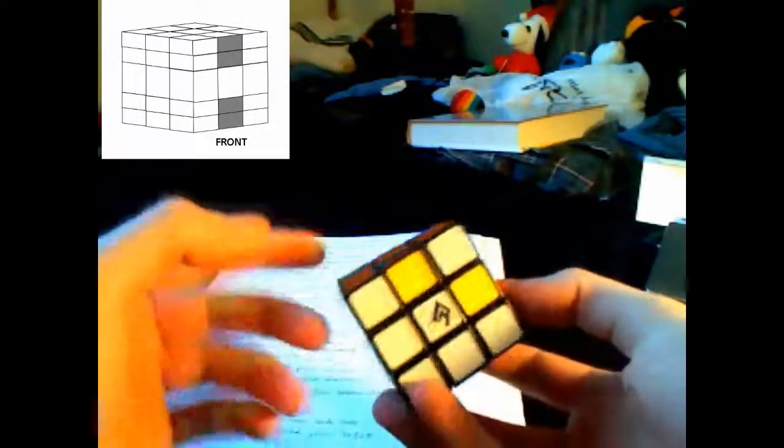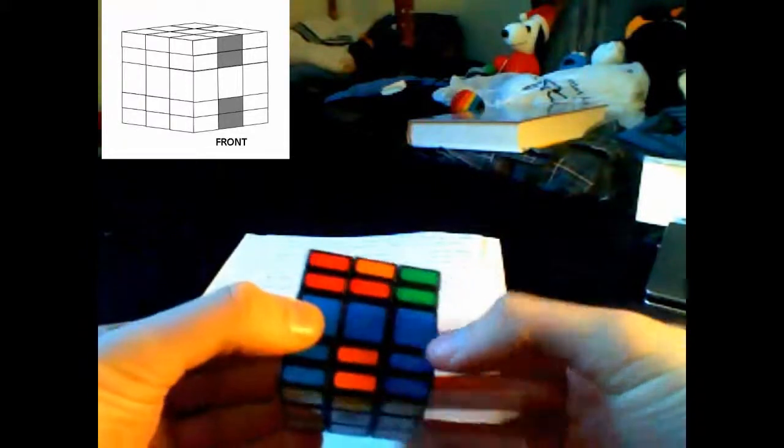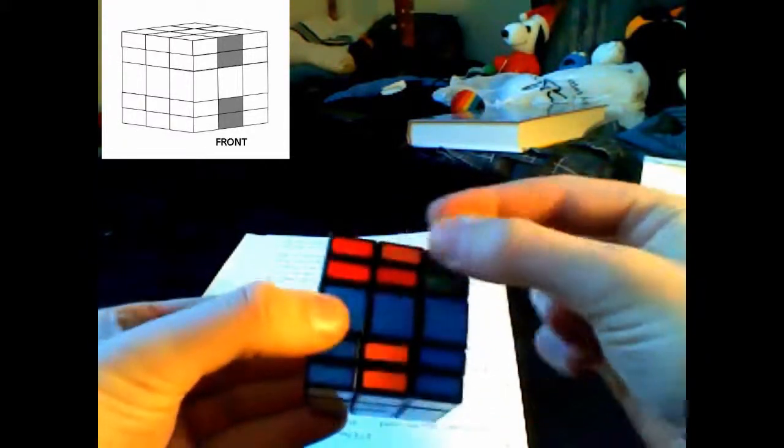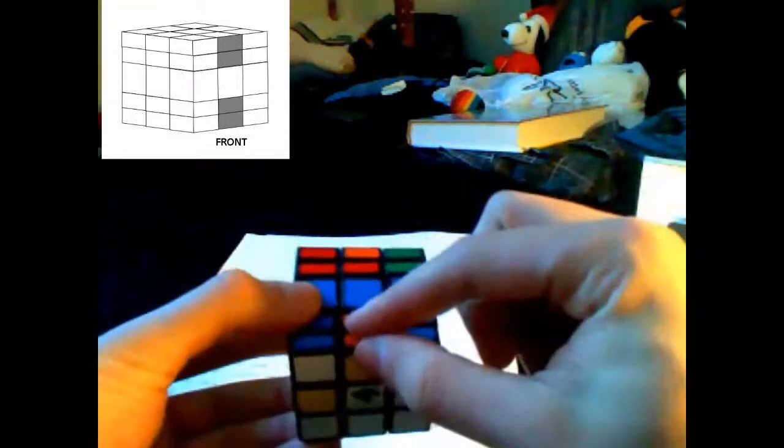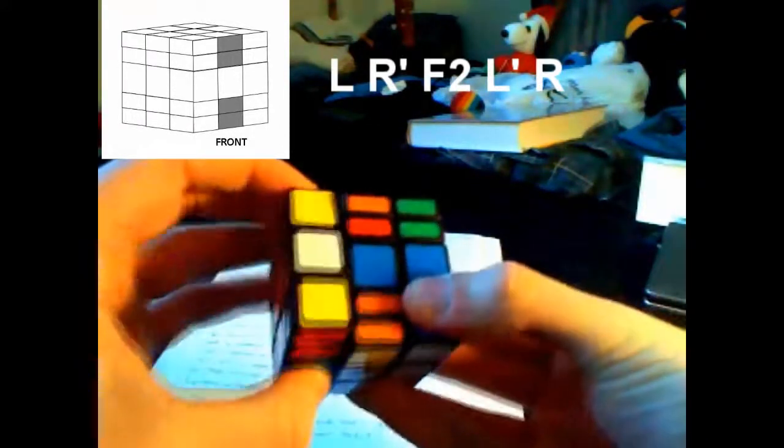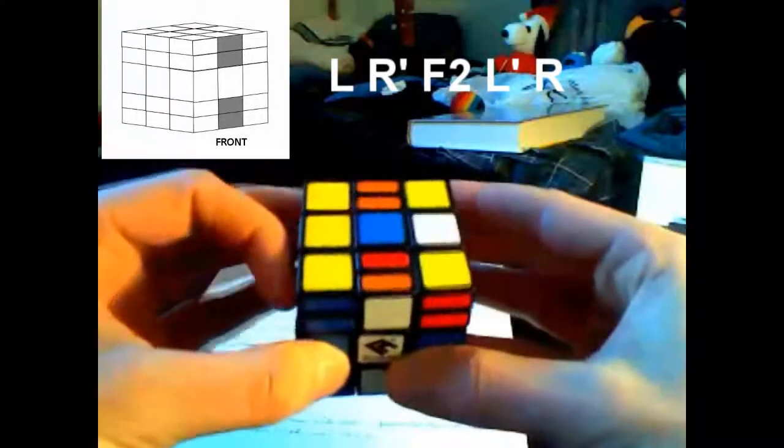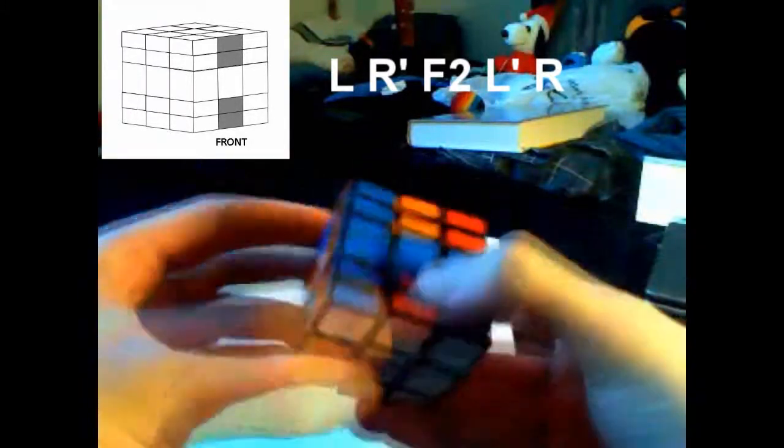If you run out of edges to work with on the bottom side, all we have to do is bring an unsolved edge above a solved edge, and do that vertical edge switch algorithm we've been using. L R' F2 L' R. And now we have two on the bottom.